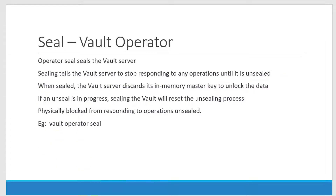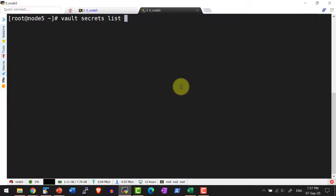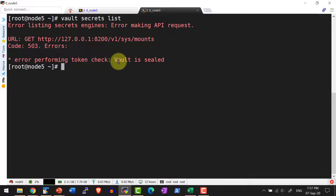Now the vault will be in the sealed state — I cannot do any operation against it. This is to protect the data. I need to manually unseal it. Unseal is the process of providing the unseal key depending on the threshold limit. Before that, it is going to completely protect the vault physically — I cannot make any change to the data either through the CLI, the UI, or by directly accessing the files. This can be verified using the command `vault secrets list`. Let me list whatever secret engines are available — it gives an error because the vault is in the sealed state.